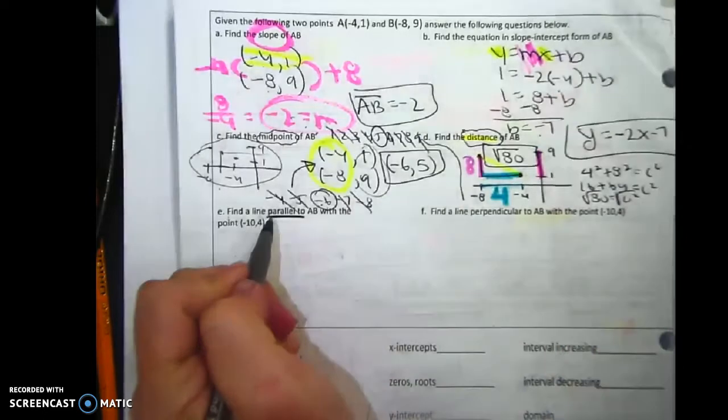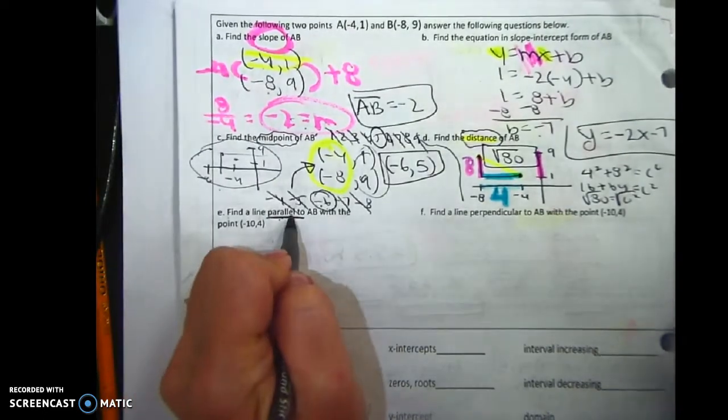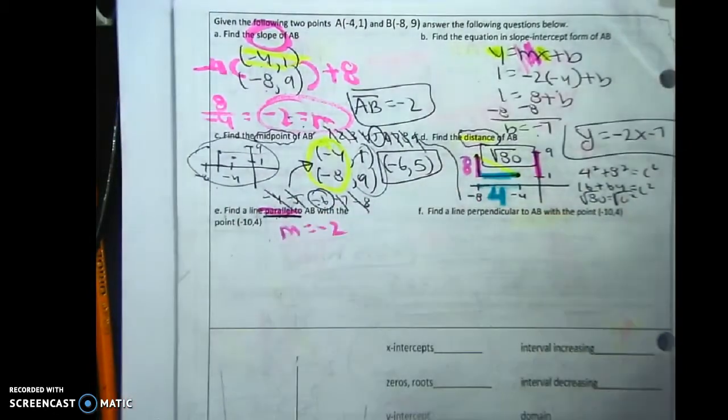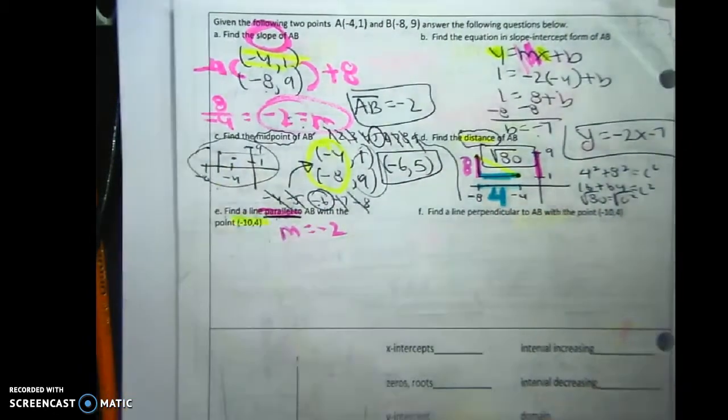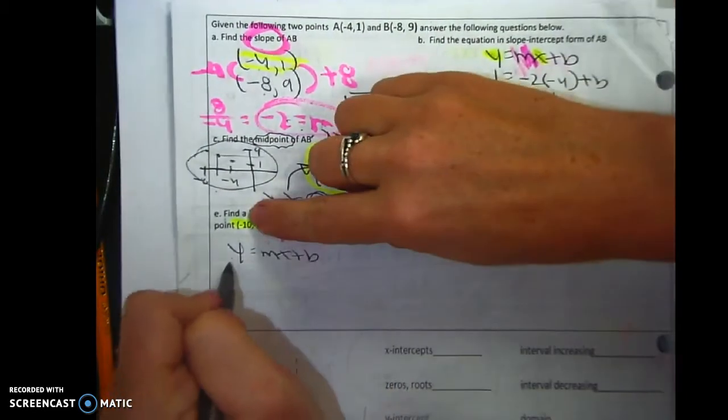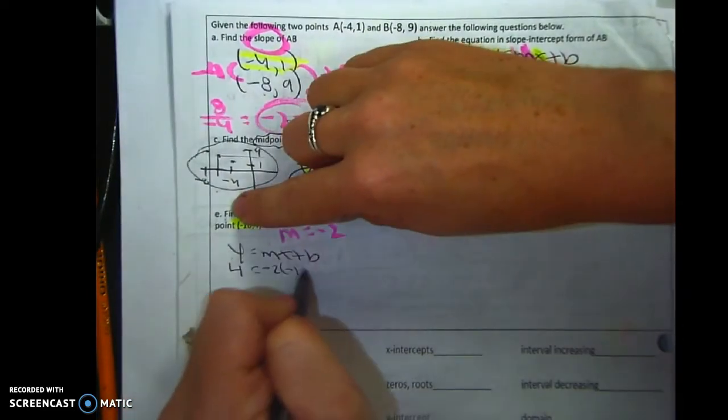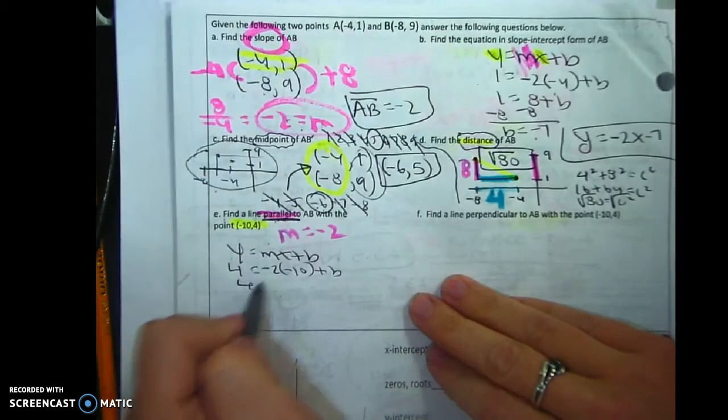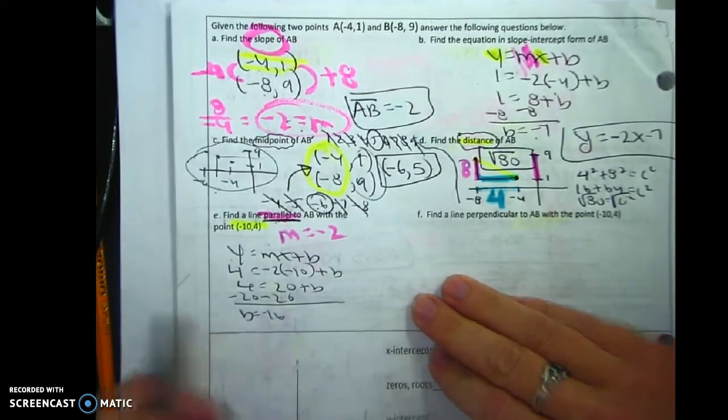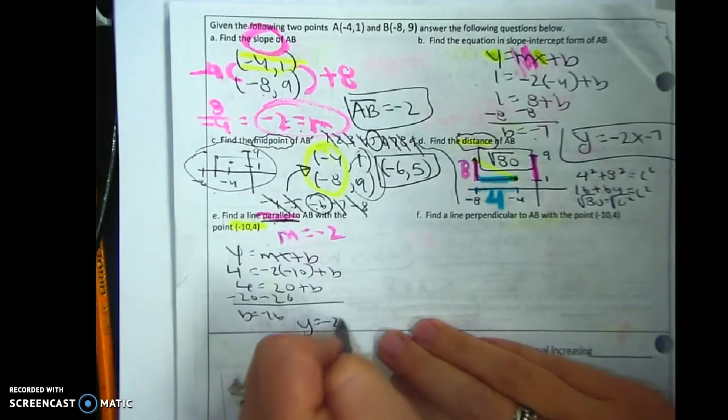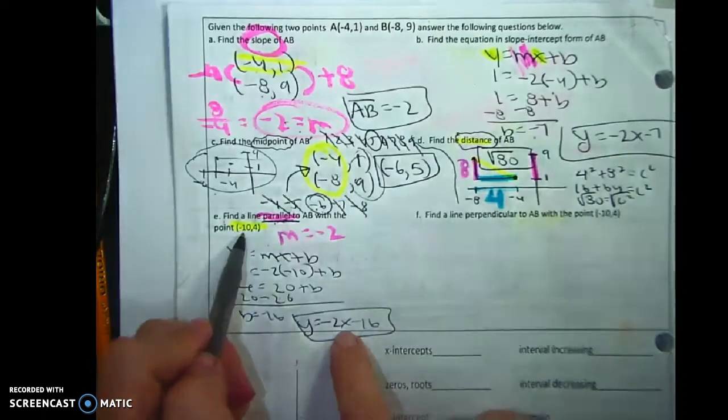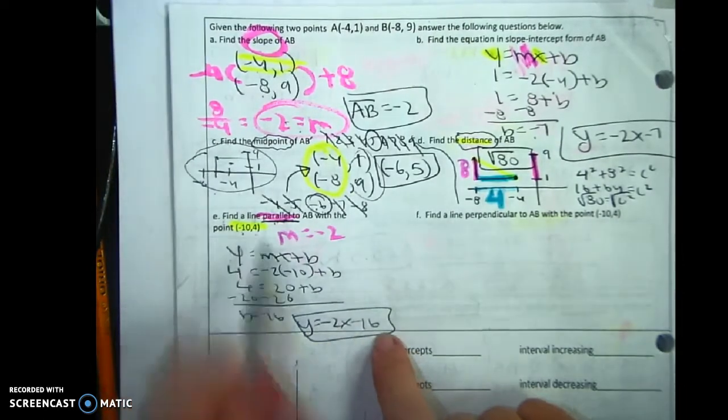Parallel. Parallel means the same slope. Well, if we're doing the same slope, we know the slope is negative 2. We take the point and we do exactly what we did up here. My y, my m, my x, b. 4 equals 20 plus b minus 20 minus 20. b equals negative 16. y equals negative 2x minus 16. I'm just going to double check. I went fast. Negative 2 times negative 10 is 20, 20 minus 16 is 4. I'm good.